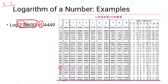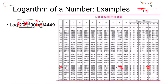In the log table, look up row 27 and find the column for the third digit, which is 8. You will see the value 4440. Then look at the mean difference column for the fourth digit, which is 6 — that gives 9. We add 9 to 4440 to get 4449. So the mantissa is 0.4449.